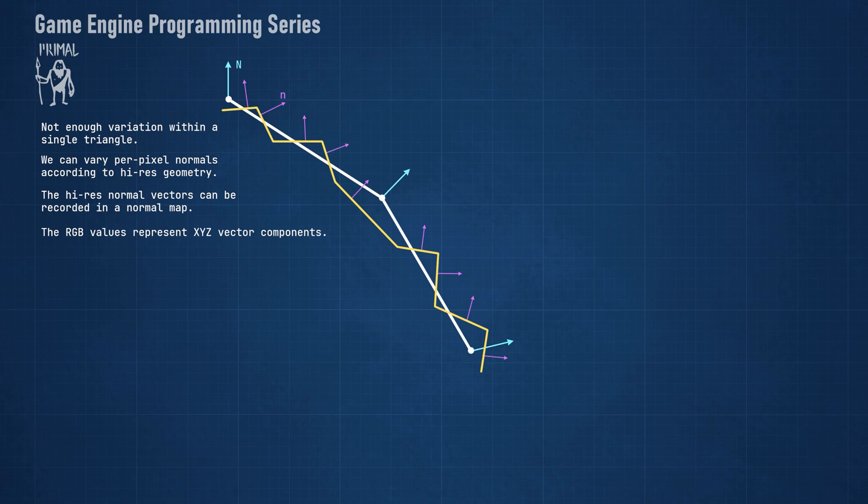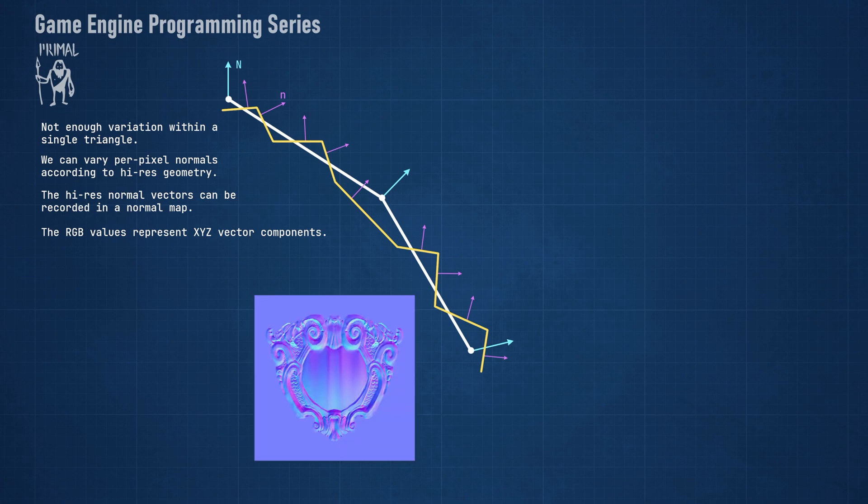As I mentioned, the RGB channels of the texture contain the X, Y, and Z components of a vector in 3D space. Furthermore, since this is a unit vector, we only have to put the X and Y components in the texture. The Z component can be calculated in the shader.